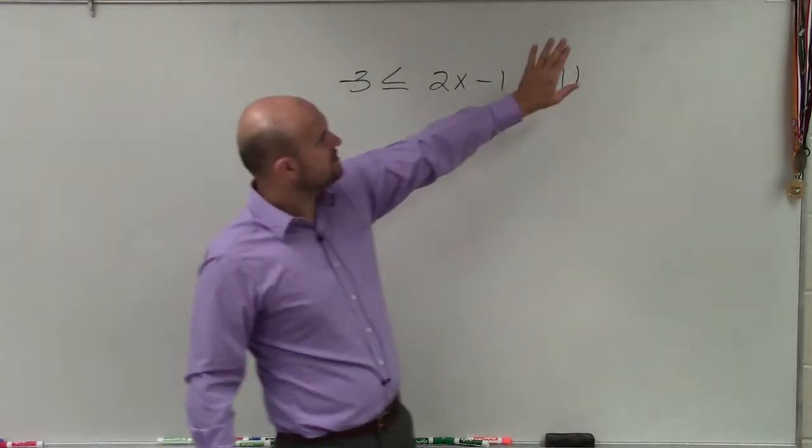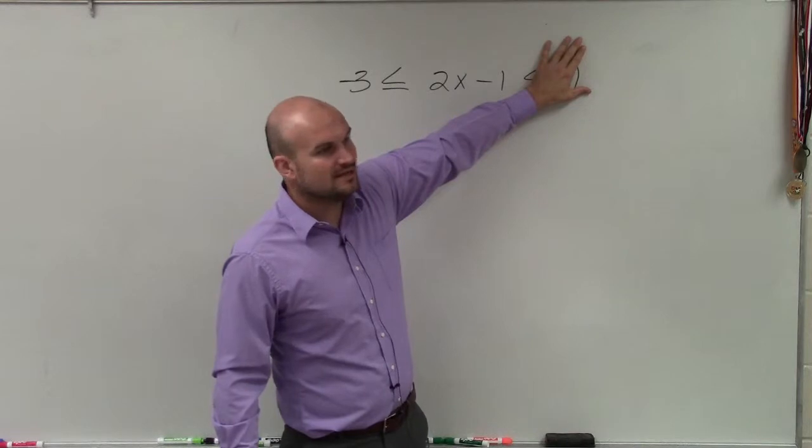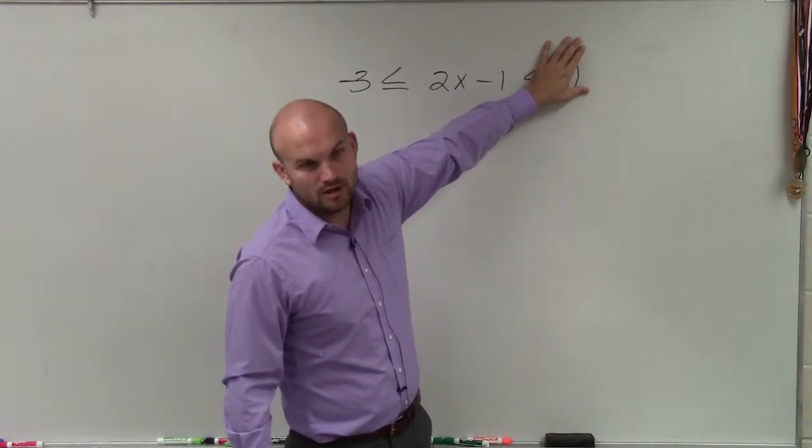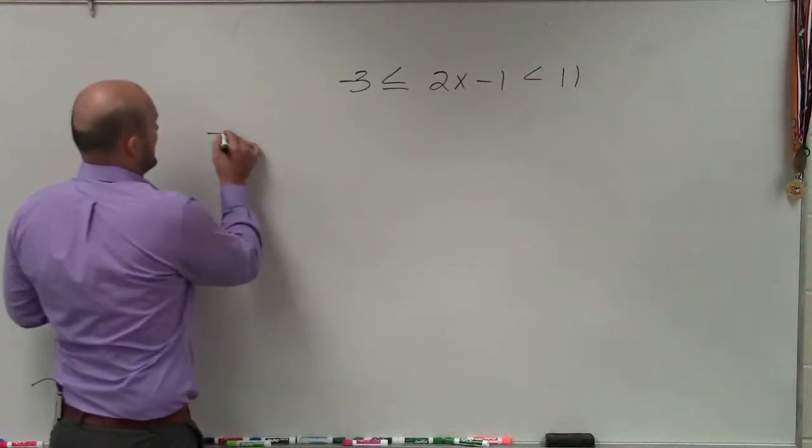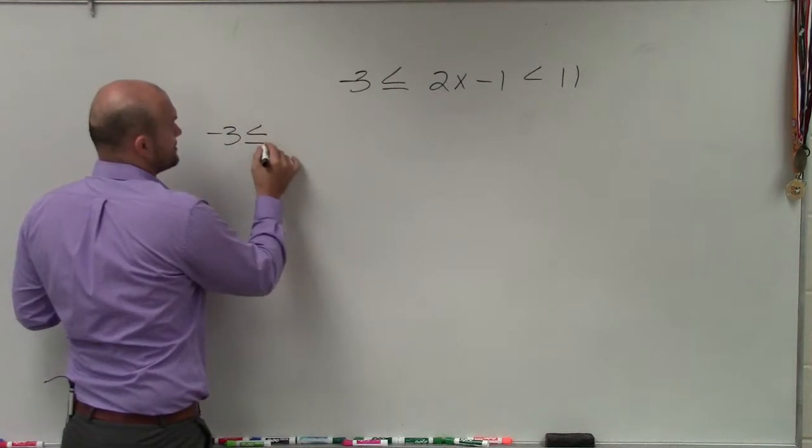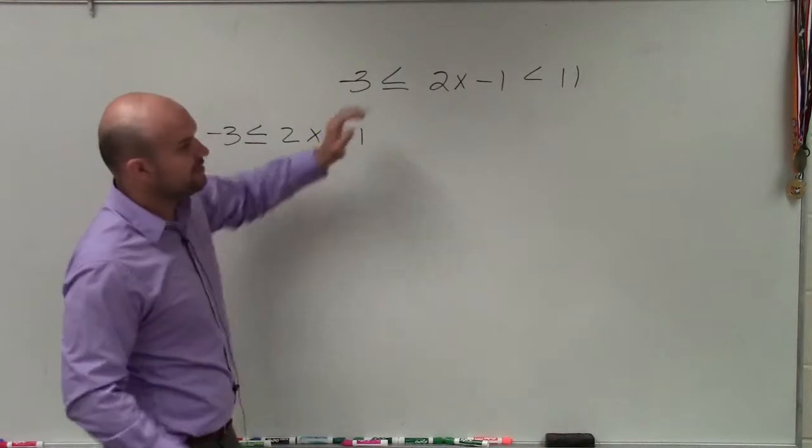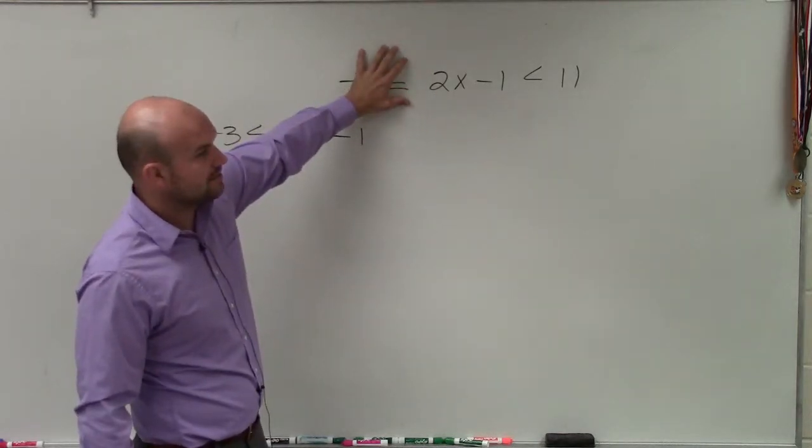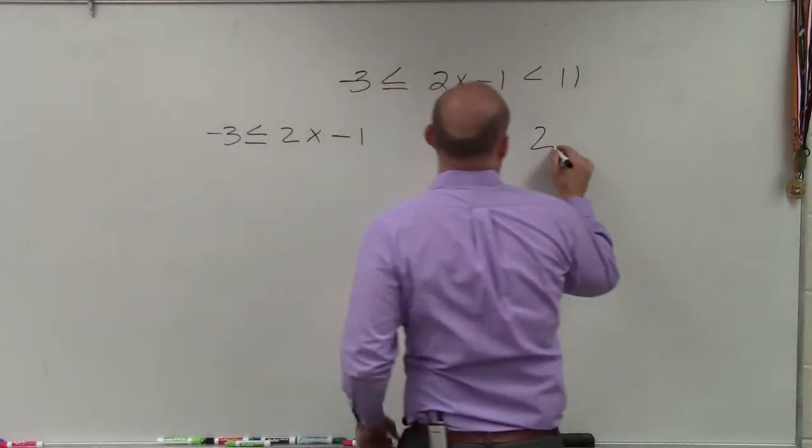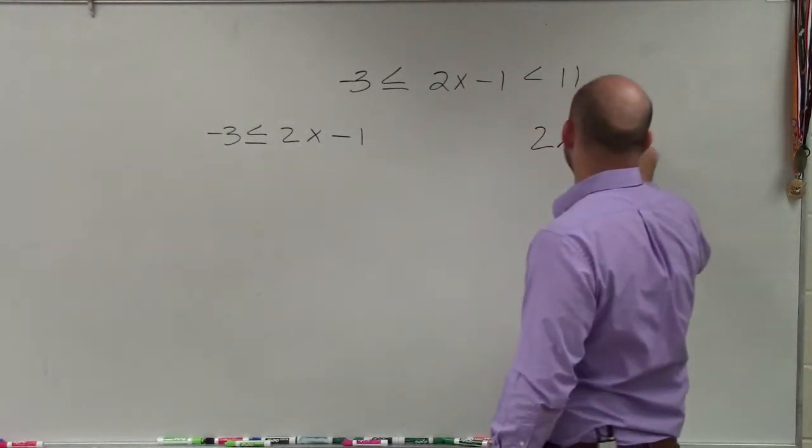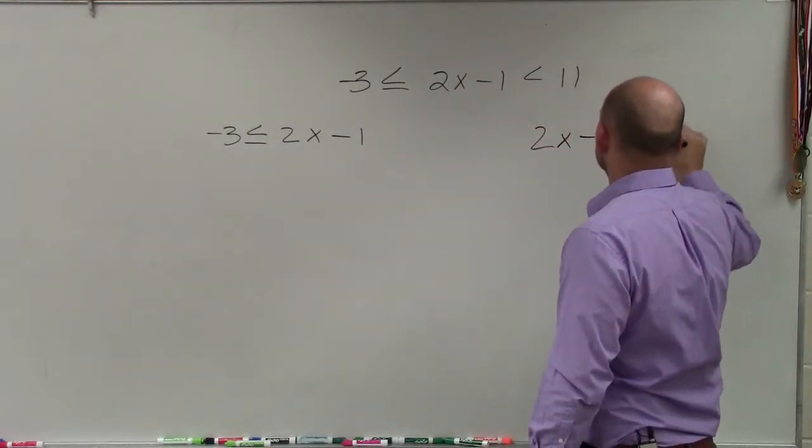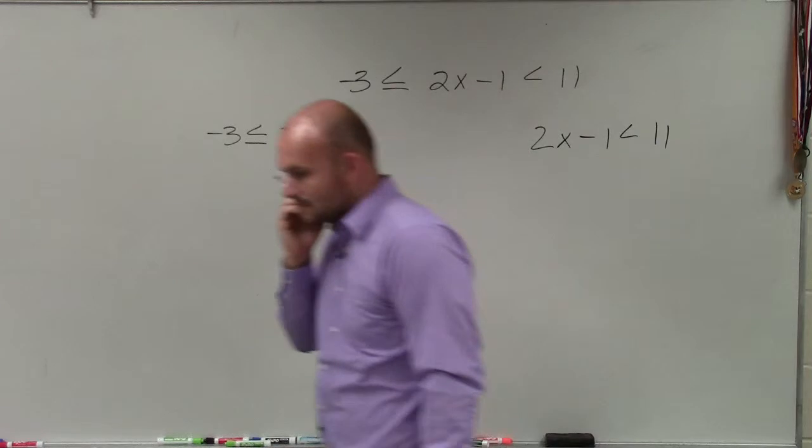So to do that, all you simply do is put your hand over one side, and that is one inequality. So I have -3 ≤ 2x - 1. Then you put your hand over the other side, and here I have 2x - 1 < 11.